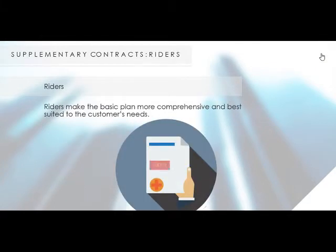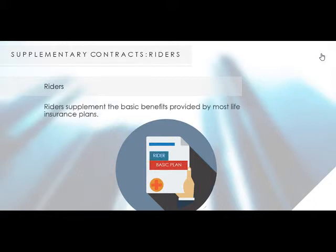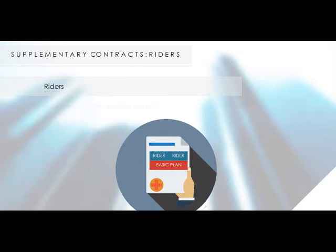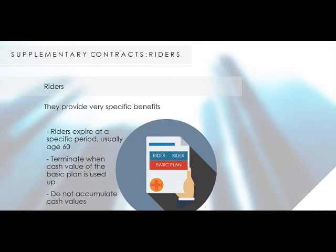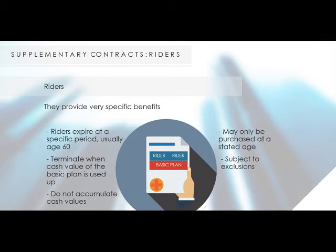Riders make the basic plan more comprehensive and best suited to the customer's needs. Riders supplement the basic benefits provided by most life insurance plans, making the insurance solution comprehensive to answer specific needs of customers. Because they provide very specific benefits, riders expire at a specific period — usually age 60 — terminate when the cash value of the basic plan is used up, do not accumulate cash values, may only be purchased at a stated age, and are subject to exclusions. Knowledge of the plans and riders enables you to perform total needs selling.